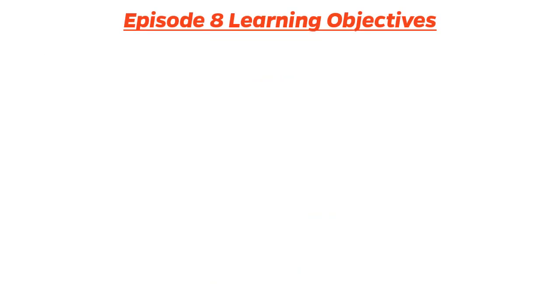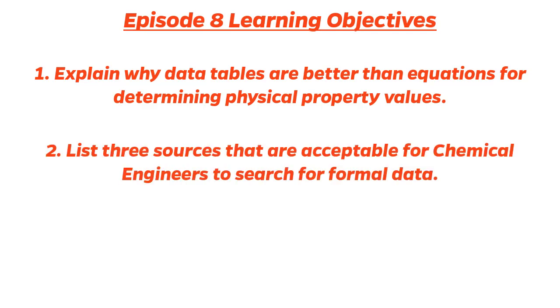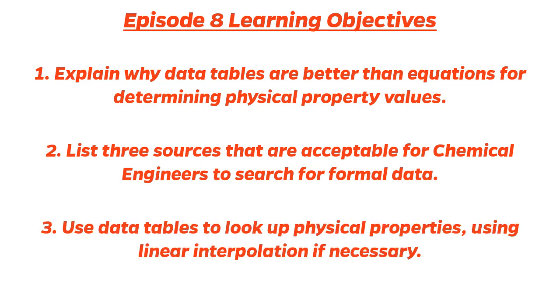Episode 8 learning objectives. Now that this episode is over, you should be able to: 1. Explain why data tables are better than equations for determining physical property values. 2. List three sources that would be acceptable for chemical engineers to search for formal data. 3. Use data tables to look up physical properties using linear interpolation if necessary.